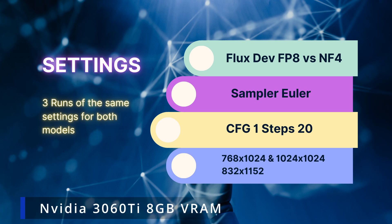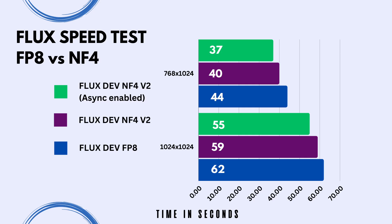I'm going to show a simple graph of the speed differences between the FP8 and NF4 V2 versions. For 1024x1024 at 20 steps using Euler, I averaged about one minute and two seconds for FP8, versus consistently 59 seconds with NF4 — a difference of only three seconds. At 704x1024, I averaged about 44 seconds for FP8 and 40 seconds with NF4. At 832x1152, I averaged about 57 seconds with FP8 and 53 seconds with NF4.